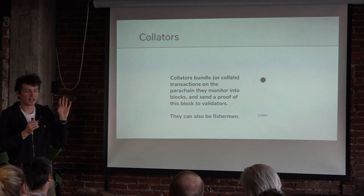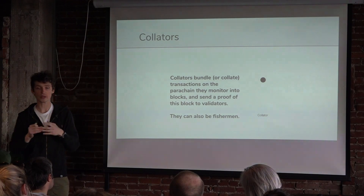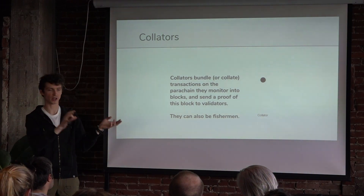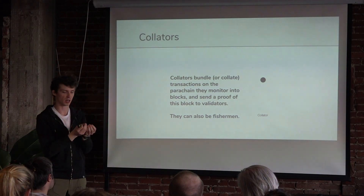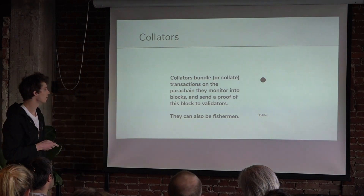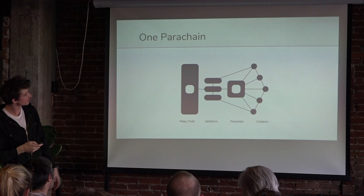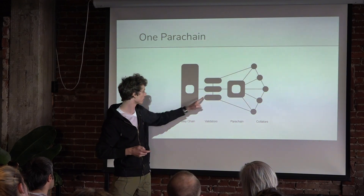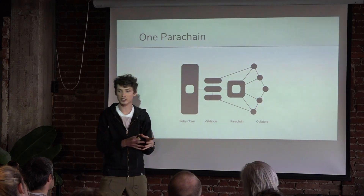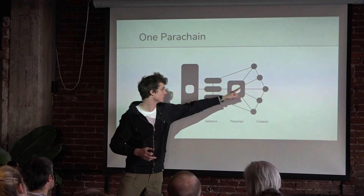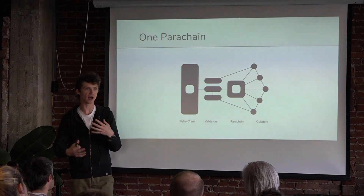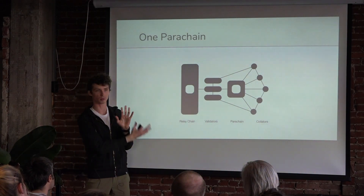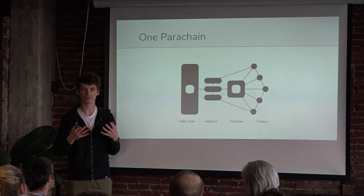Collators give suggestions to the relay chain — they say 'we think this state transition happened, here's our best block.' The validators on the relay chain take the block header, which is lightweight, and add it to the relay chain. Validators don't actually have to know that everything on the parachain was faithfully executed — that's up to the parachain to decide how to bundle blocks. But the validators have something that lets them run the block through to verify it was put together in a valid way before adding it to the relay chain.